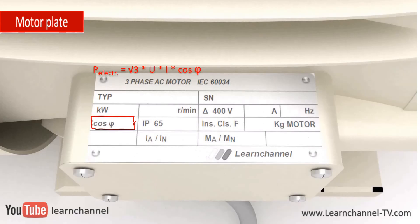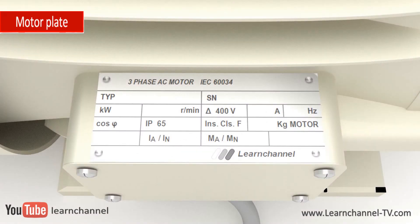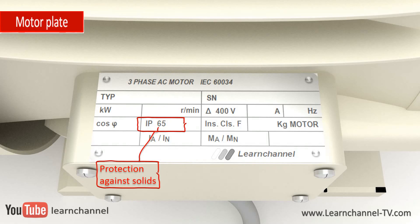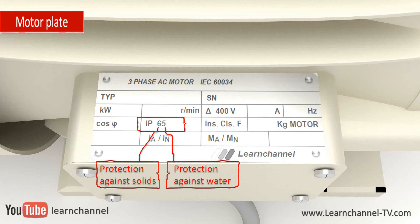The insulation class describes the thermal tolerance of the motor windings. The letter indicates the motor windings' ability to withstand operating temperatures for a specific length of time. Motors controlled by a variable frequency drive usually must have a higher insulation class. Ingress protection codes define how well an enclosure protects against the external environment. As the number gets higher, the protection gets better. The first digit defines the protection level against solids, the second against liquids. You must use both digits to define an enclosure. Further information about your motor you get from the datasheet.